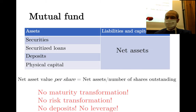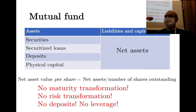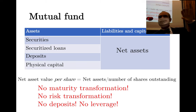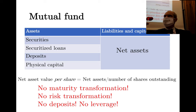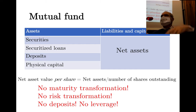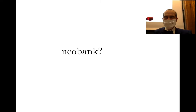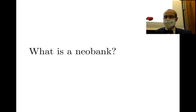Mutual funds are transparent and provide no transformation at all — completely different from banks. The asset side of a bank is a portfolio, but the liability side is not a mere reflection of the asset side. The bank has shareholders and many creditors who provided capital through different schemes, which means maturity and risk transformation.